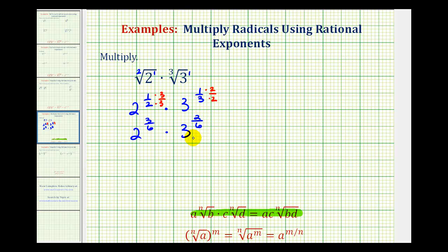Now we're going to write this back in radical form. And since both denominators have a six, we'll have a common index. Two raised to the three-sixths power would be the sixth root of two-cubed. And three raised to the two-sixths power would be the sixth root of three to the second.